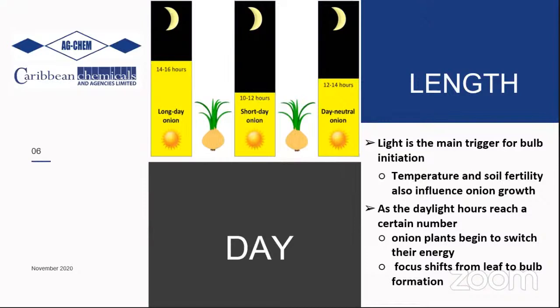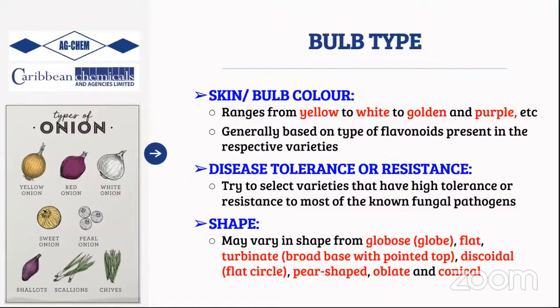As daylight corresponds to the variety, the onion shifts focus from vegetative growth to bulb development. Varieties like Texas Early Grano, planted in spring, bulb earlier because they are designed for short day lengths. Bulb color ranges from yellow and white to purple and red, determined by the type of flavonoids present — the flavonoids in red and purple onions differ from or are additional to those in yellow onions.